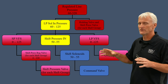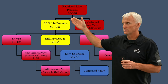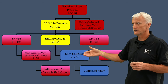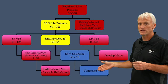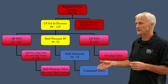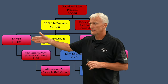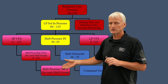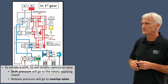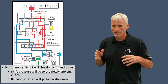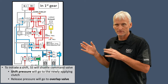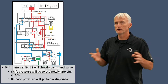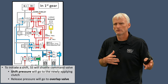This next chart gets a little further into the shift groups. Regulated line pressure goes to the solenoid feed limit valve, then to the shift solenoid feed limit valve, then to the shift solenoids, and those solenoids control the command valve for each of the shift groups. That command valve initiates a shift. The shift pressure solenoid works on the shift pressure regulator valve for each group, and that ultimately becomes the shift pressure that the clutch applies with.